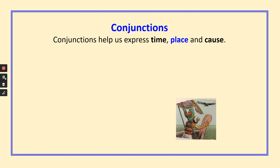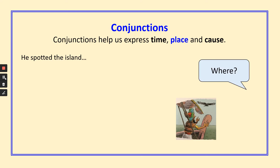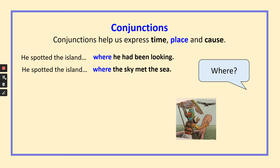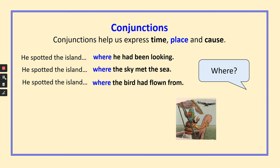Conjunctions can help us express time, place and cause. Now we're going to look at place. He spotted the island where he had been looking. He spotted the island where the sky met the sea. He spotted the island where the birds had flown from. Can you give me some of your own ideas? He spotted the island where...?